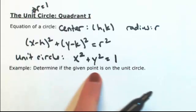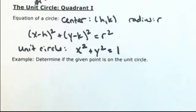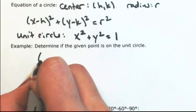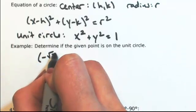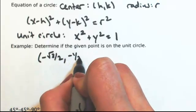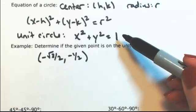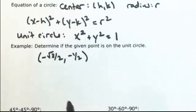Any point on the unit circle will satisfy this equation. Let's determine if the given point is on the unit circle. Let's say the given point is negative square root of 3 over 2, negative 1 half. The first coordinate is x, the second one is y, so let me plug that into the equation to see if we get 1.